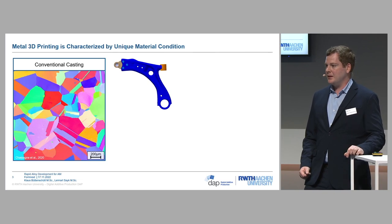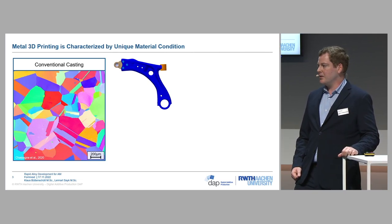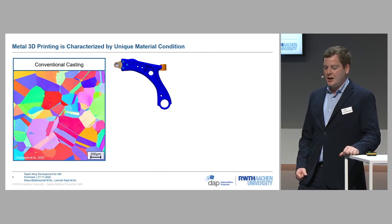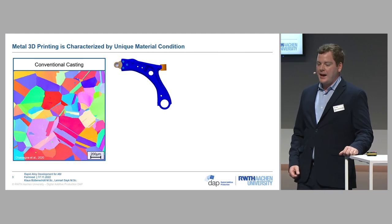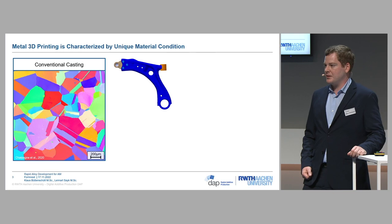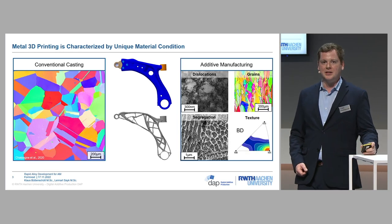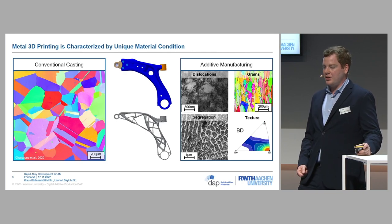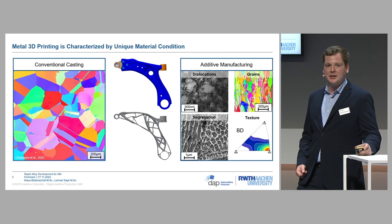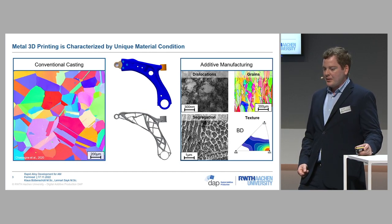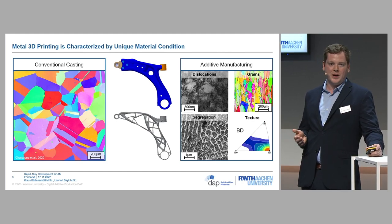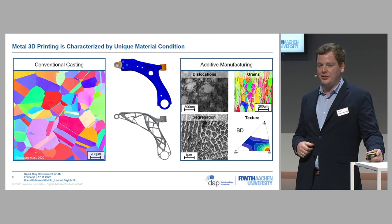For the motivation, you can see here in the middle a control arm for a car. On the left side is the microstructure of the conventional casting process — the structure is pretty homogeneous, with grains around 200 micrometers and a homogeneous orientation. Looking at the additive microstructure, we see many differences: more dislocations, much smaller grains elongated in the building direction, segregations of different elements, and a strong texture in the building direction. These two completely different processes produce completely different microstructures, which is why we need specially tailored alloys for additive manufacturing.